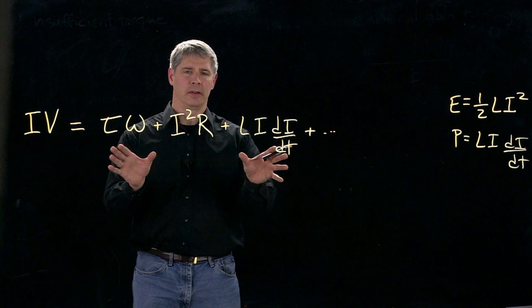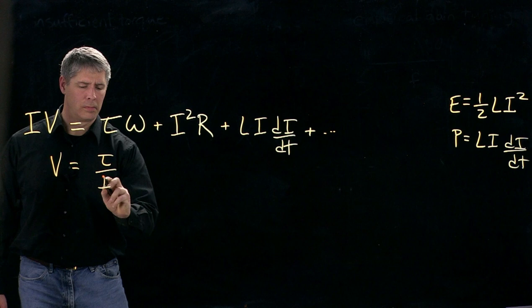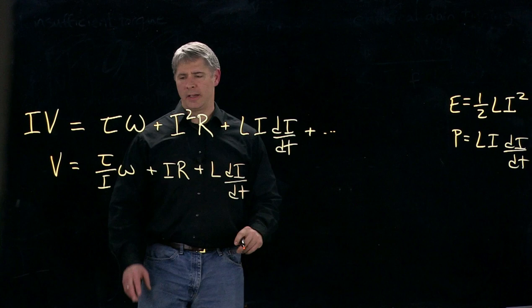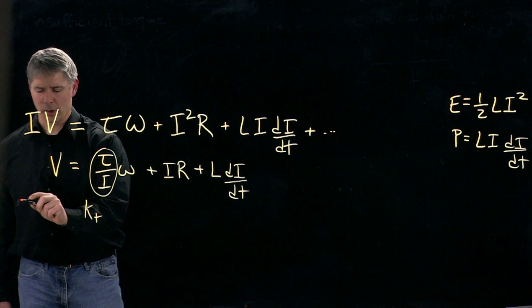And now if we take this all and divide by the current on each side. So divide by i. Now we get this as our equation. And it turns out this ratio here is very important. So if I take this, I'm going to call that K sub T or the torque constant.